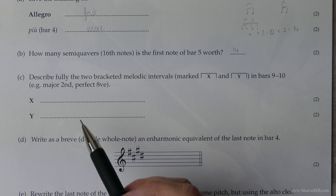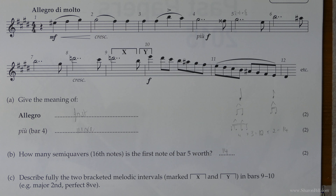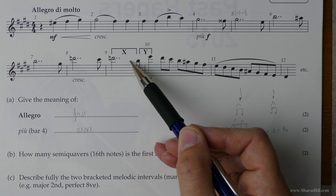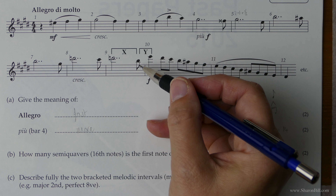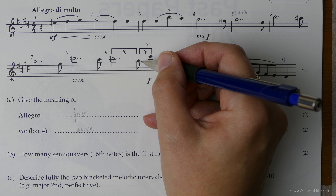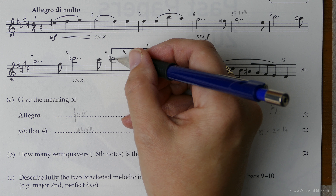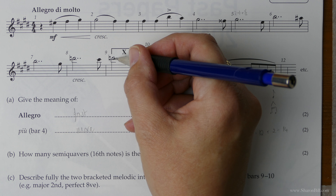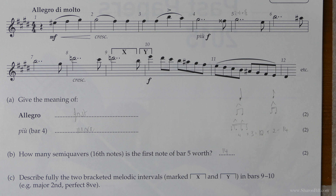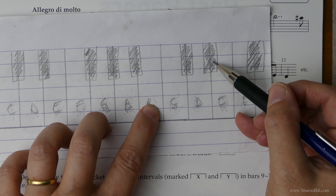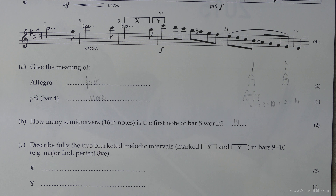Let's move on: we need to describe fully the two bracketed melodic intervals marked X and Y in bars nine and ten. We always count from the lowest note, even if it comes second. For interval X we're going from B up to D natural. B is the space, C is the line — that's a second — D is a third. So it's a third, but we need to describe it more fully. B to D sharp would be major; however, that sharp is made natural, making it smaller. B to D sharp is major; made smaller, it's a minor interval — part of the B minor scale — so we call that a minor third.